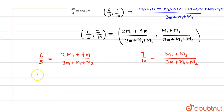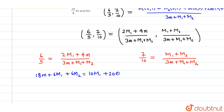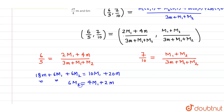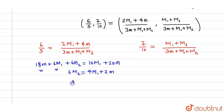Cross-multiplying the x-coordinate equation gives 18m plus 6M1 plus 6M2 equals 10M1 plus 20m. Rearranging, we get 4M1 minus 6M2 equals 2m, which simplifies — dividing by 2 — to: 3M2 equals 2M1 plus m.